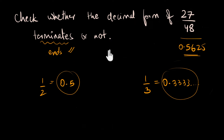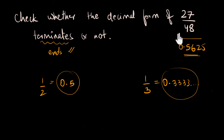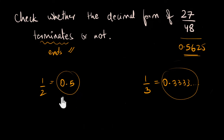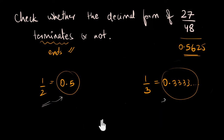Instead of just giving away the method, I'd like us to discover it together. By the end of this video, we'll be able to look at any fraction — not just this one — and determine whether its decimal form terminates or not. More importantly, we'll have a very clear idea of why that method works. Let's get started and find the connection between fractions and decimals.